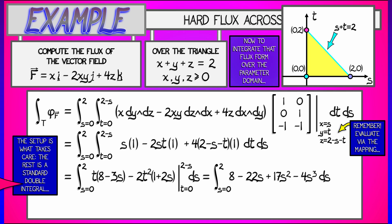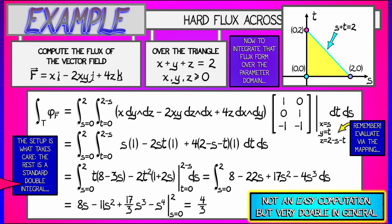I get as an integrand, 8 minus 22s plus 17s squared minus 4s cubed. Integrating that with respect to s as s goes from 0 to 2 gives me a final answer of 8s minus 11s squared, plus 17/3 s cubed minus s to the fourth. Evaluating that from 0 to 2 gives me 4/3.